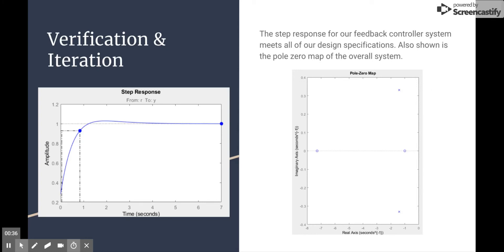Now that we know why this was a good solution for our problem, let's look at the actual step response of our overall system. Here you can see we have a rise time of just under one second and no steady state error. This system matched all of our specifications and therefore appropriately solved our problem. On the right you can see the pole zero map for our overall system.